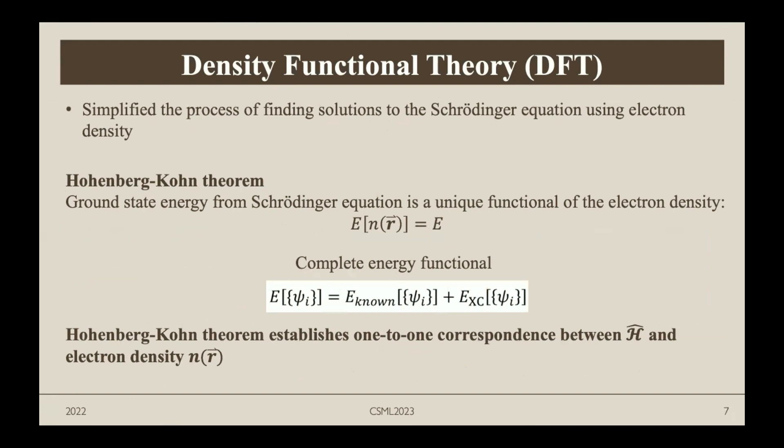Density functional theory is essentially a simplified process of finding solutions to the Schrödinger equation using electron density. It's based on the Hohenberg-Kohn theorem, which states that the ground state energy from the Schrödinger equation is a unique functional of the electron density. The functional takes a function as input and outputs a number. The complete energy functional has two parts: the unknown part and the exchange-correlation part, which involves all quantum mechanical effects not included in other terms. Taking advantage of this theorem, the problem of finding the solution to the Schrödinger equation is reduced to a much simpler problem.